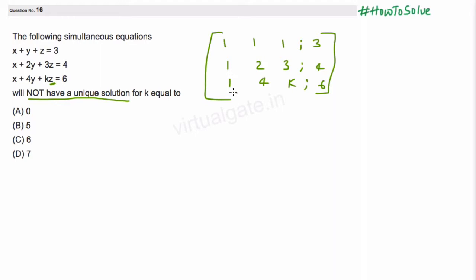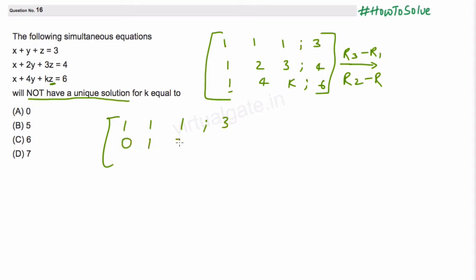We start by making entries zero. We perform R2 minus R1 and R3 minus R1. We get: row 1 stays as 1, 1, 1, 3; row 2 becomes 0, 1, 2, 1; row 3 becomes 0, 3, k minus 1, 3.